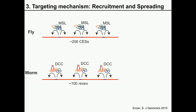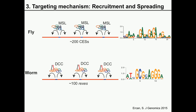While the strategies are very different, there are common themes in domain-wide gene regulation. This common theme is the strategy of targeting a large chromosomal domain in two steps: first, specific recruitment of the protein complex to the domain, and second, spreading of the complex along the chromosome. In flies, recruitment of the MSL dosage compensation complex occurs at chromatin entry sites, about 200 across the X-chromosome. In worms, recruitment is done by the dosage compensation complex binding to recruitment elements on the X, called REX sites, about 100 of them along the 17 megabase X-chromosome.